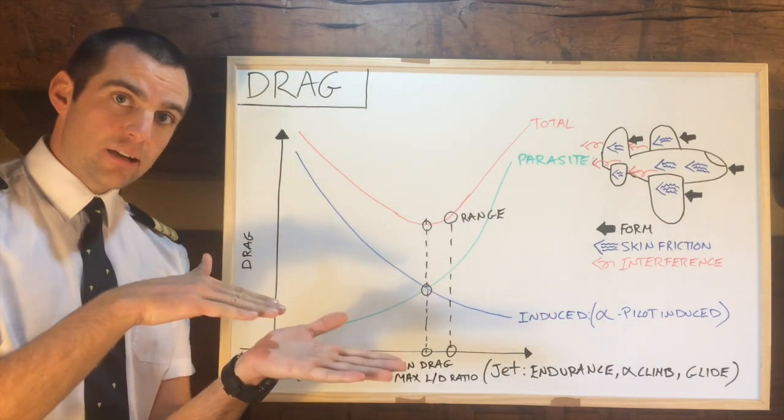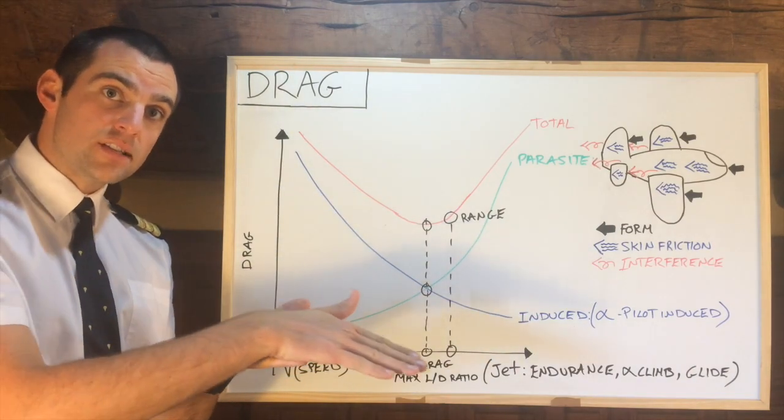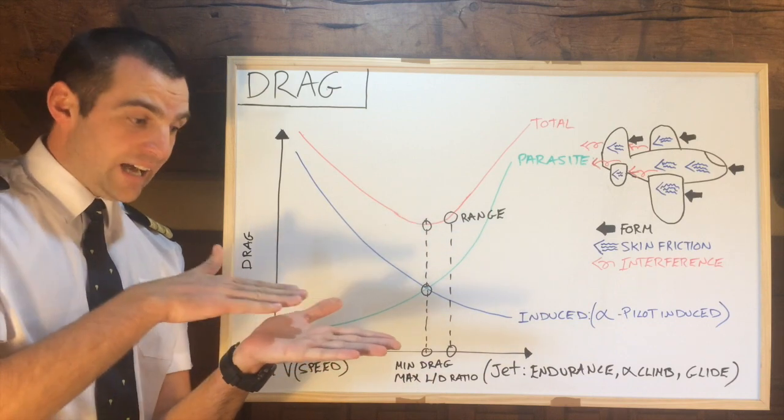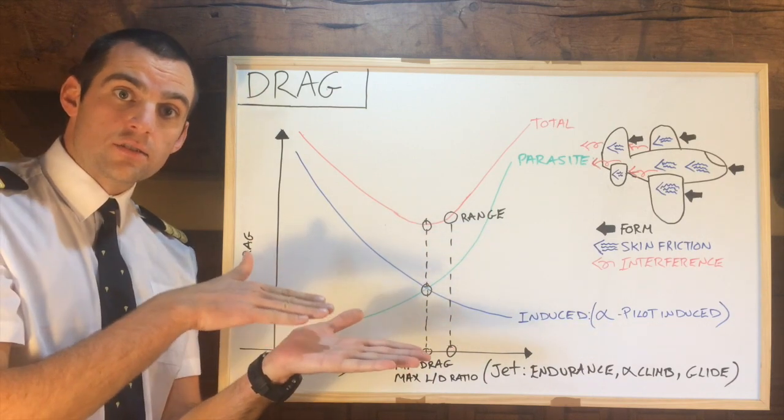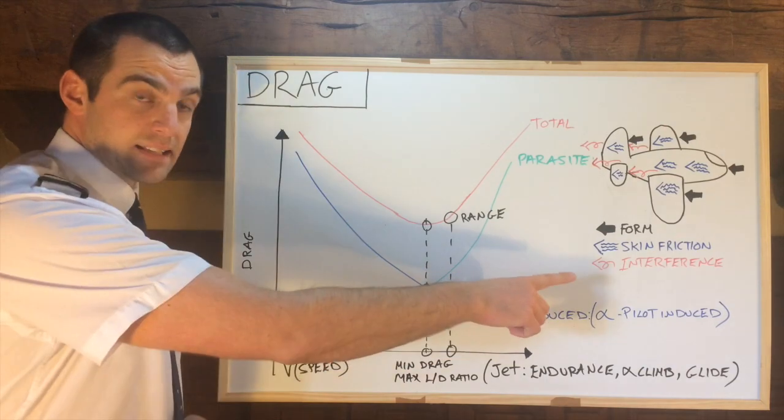Now skin friction, there is a layer of air in contact with the surfaces of the aircraft and that actually generates drag because of the resistance on the skin itself and that skin friction.